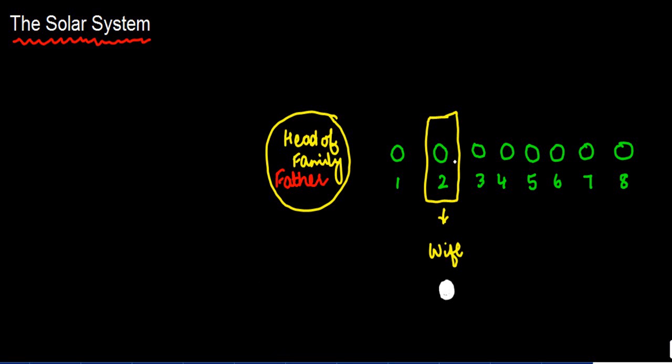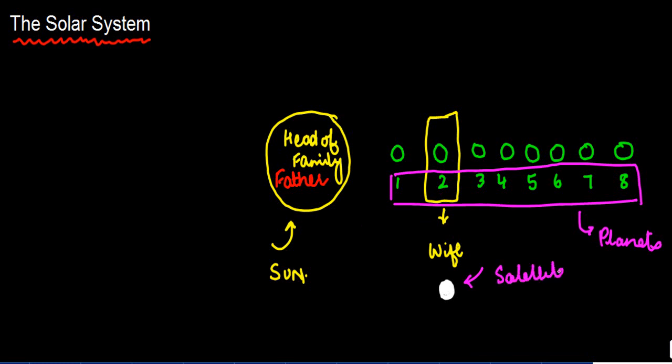Now consider a solar system. A solar system is something similar to this kind of family where the head of the family that we spoke about is nothing but the Sun, and these eight family members are nothing but the planets. Each planet may have his or her own satellite, just like each family member may have a spouse.